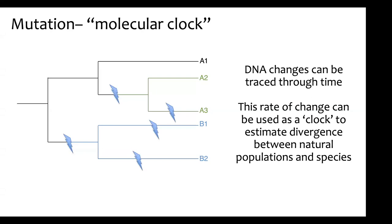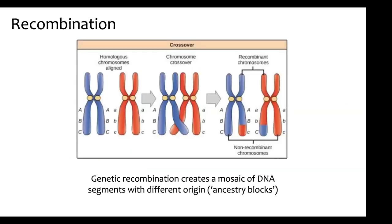Mutation and recombination are extremely important for the first part of this talk. Mutation is the accumulation of errors in copying the DNA chain through time. When two populations diverge, they're more likely to have a higher number of variants separating them the longer they've been separated — because more generations have passed. This can be thought of as a type of molecular clock: the more different two DNA copies are, the longer ago they diverged.